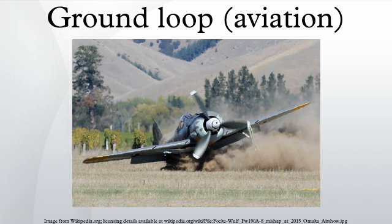In aviation, a ground loop is a rapid rotation of a fixed-wing aircraft in the horizontal plane while on the ground. Aerodynamic forces may cause the advancing wing to rise, which may then cause the other wingtip to touch the ground. In severe cases, the inside wing can dig in, causing the aircraft to swing violently or even cartwheel.